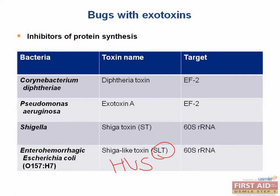HUS is a very serious complication, particularly associated with enterohemorrhagic E. coli infections. The classic triad of HUS consists of hemolytic anemia, thrombocytopenia, and renal failure. In the hematology section you will learn about thrombotic thrombocytopenic purpura, which is a related disorder.